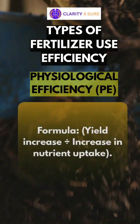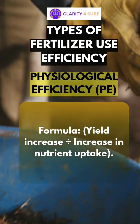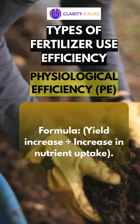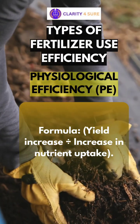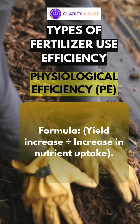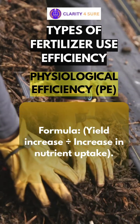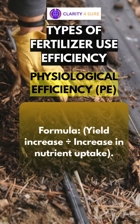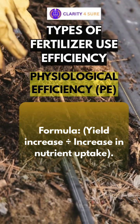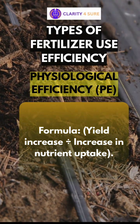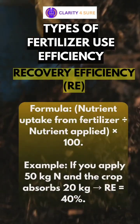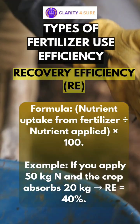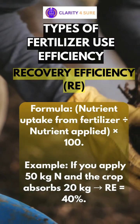The second type is physiological efficiency. The formula is: yield increase divided by increase in nutrient uptake. It tells how much yield we get for every kilogram of nutrient the plant actually absorbs.